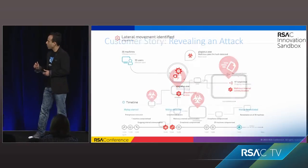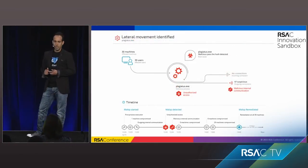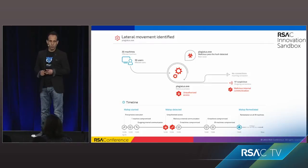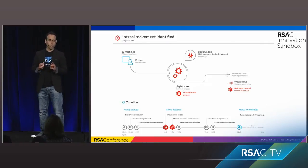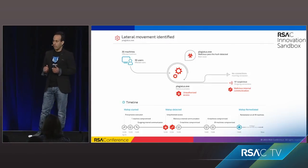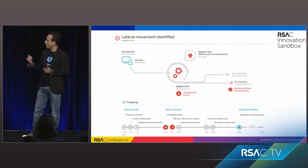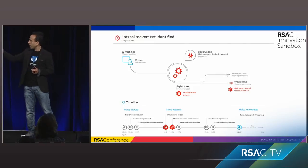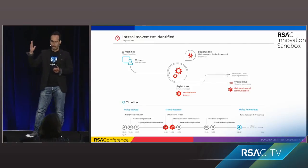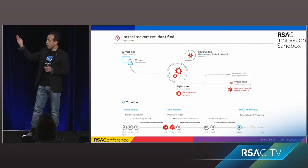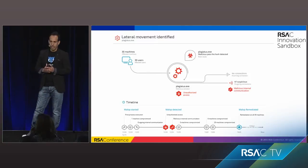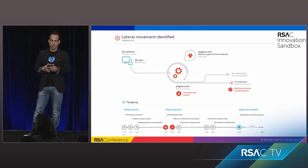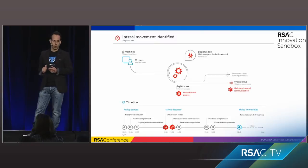We managed to show them that 30 computers out of 20,000 computers in the environment were compromised. The system managed to show them the full timeline of the attack, the root cause of the attack, and the type of communication that was conducted — both in and out of the organization — while the attack was happening.